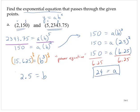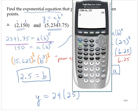We have a is 24 and b is 2.5. Therefore, our equation is y equals 24 times 2.5 to the x. We could check our work through simple substitutions. Let's check the second point. What's 24 times 2.5 raised to the fifth power? 2343.75. It checks out.